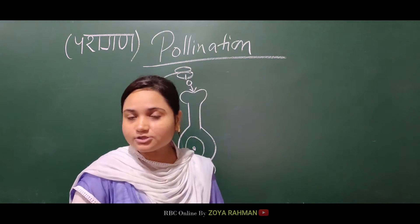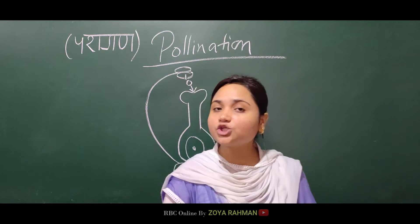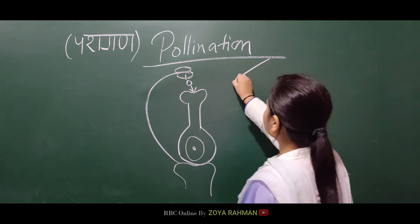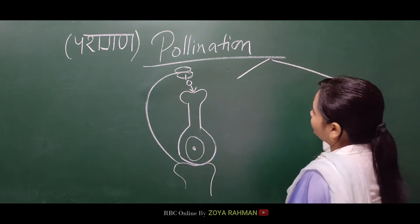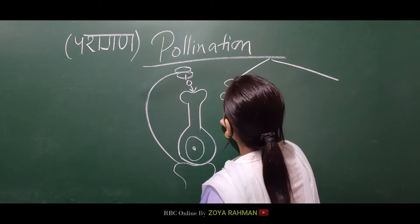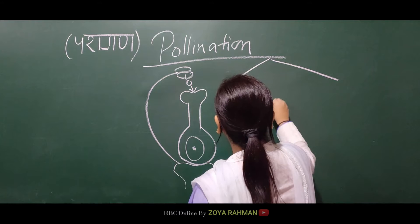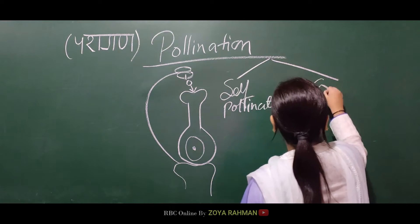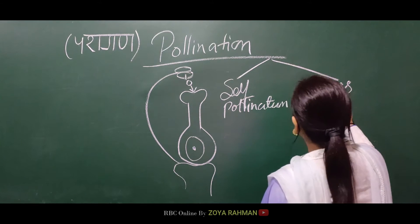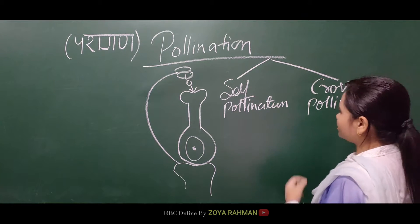We have two categories of pollination. The first is self-pollination and the second is cross-pollination. These are the two types of pollination: self and cross-pollination.